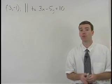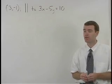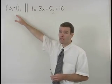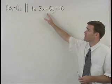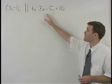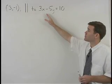In this problem, we're asked to write the equation of the line that passes through the point and is parallel to the line that has the equation 3x minus 5y equals 10.